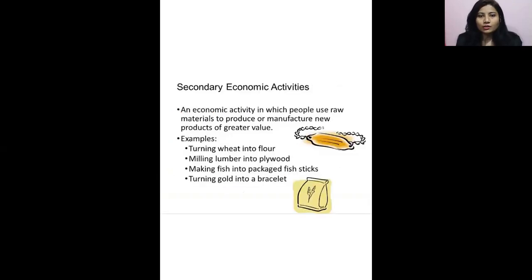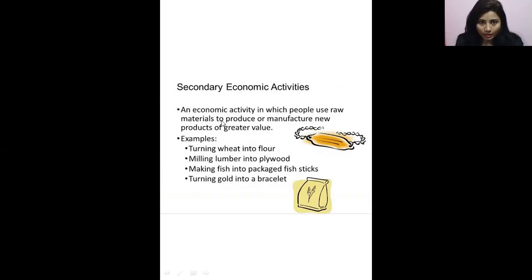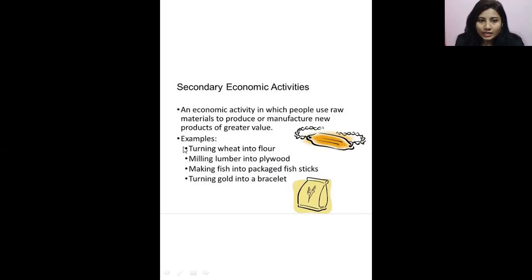In this industry chapter, most importantly we are going to learn about secondary economic activities. A secondary economic activity is one in which people use raw materials to produce or manufacture new products of greater value. For example, turning wheat into flour, lumber into plywood, fish into packaged fish sticks, or even turning gold into a bracelet.